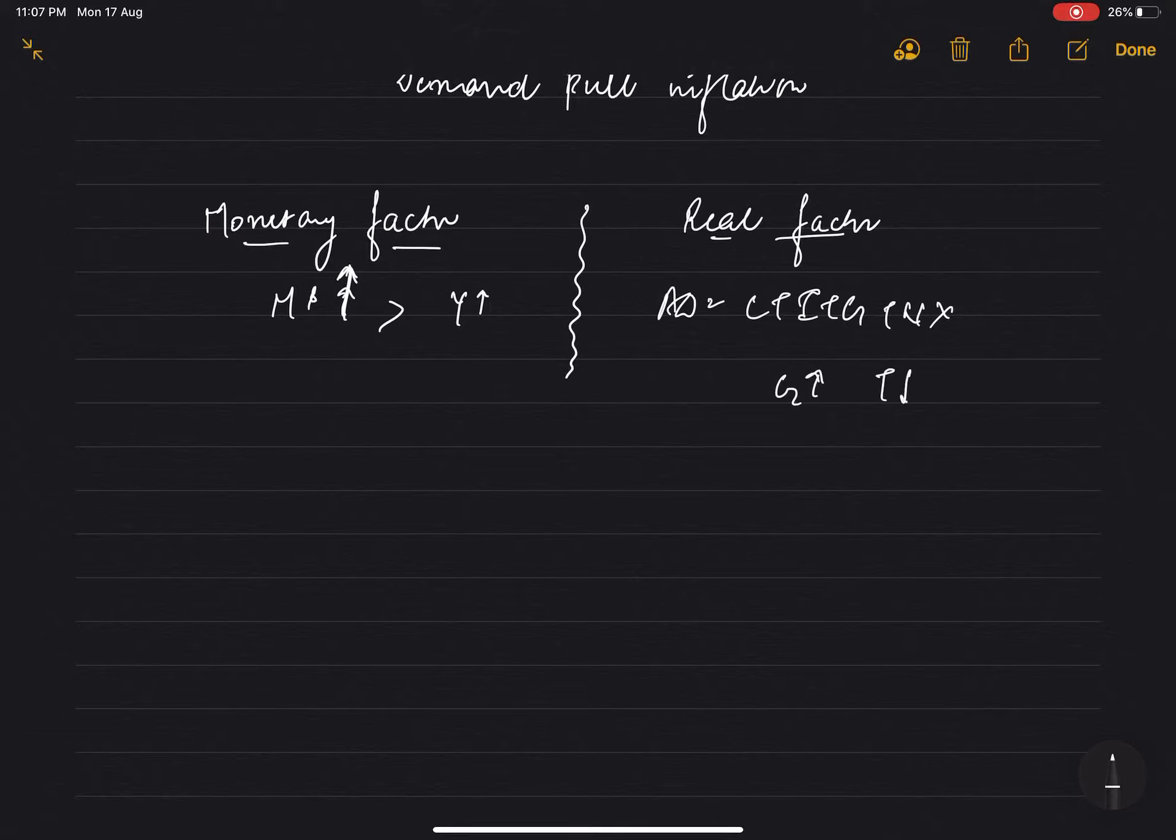When government spending increases, taxes decrease, then general prices increase. So increase in government spending without change in revenue - when G increases but T doesn't increase. Second is fall in tax - when taxes decrease with no change in government spending. These are two points: one is increasing and the other is decreasing.